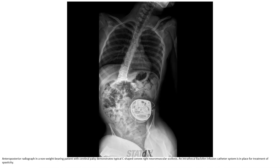Also very often present. This is an AP radiograph in a non-ambulatory patient with cerebral palsy demonstrating what is called a C-shape convex right neuromuscular scoliosis. An intrathecal baclofen infusion catheter system is in place for treatment of spasticity.